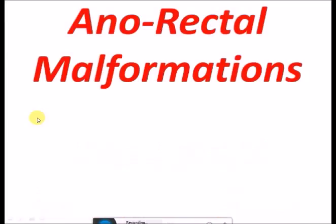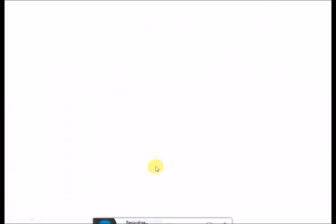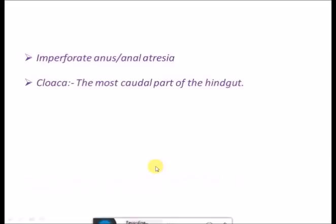Let us today learn about the topic of anorectal malformations. This is a diagram showing a dimple where the anus should have been but is not formed. This condition is also called imperforate anus or anal atresia.